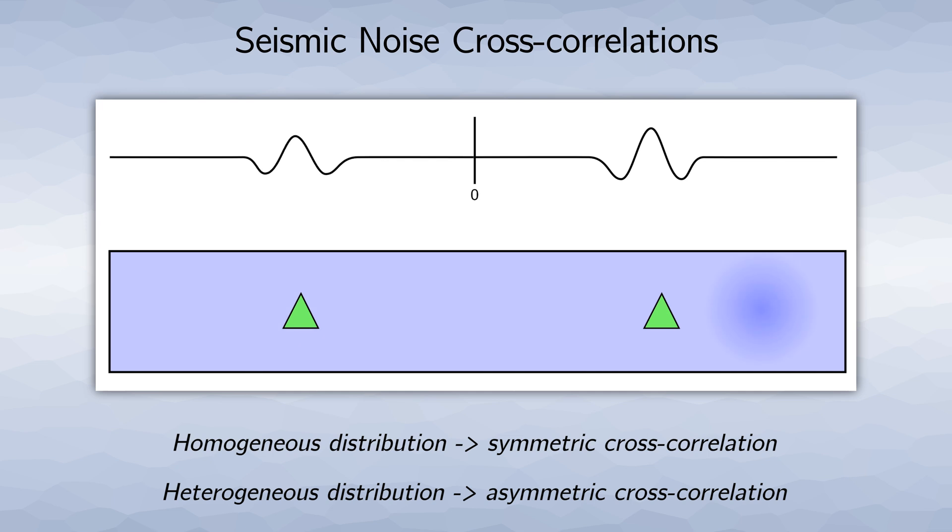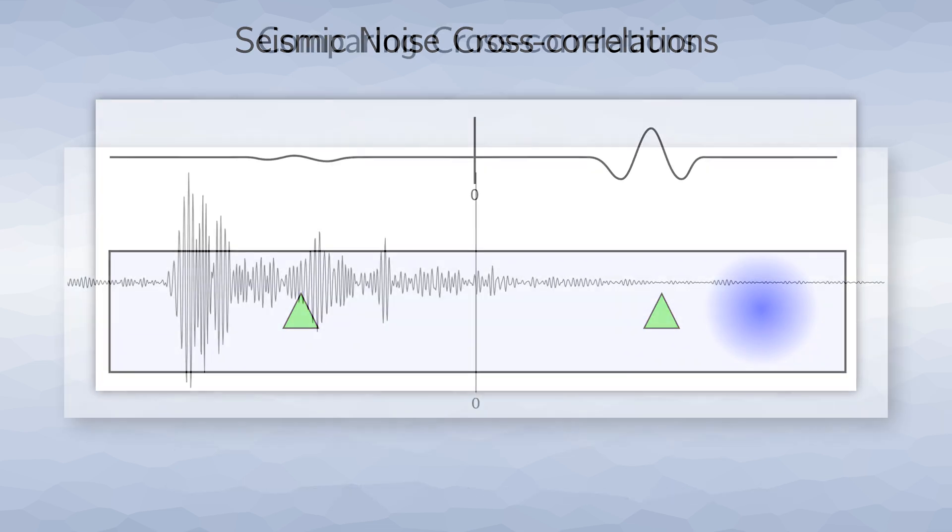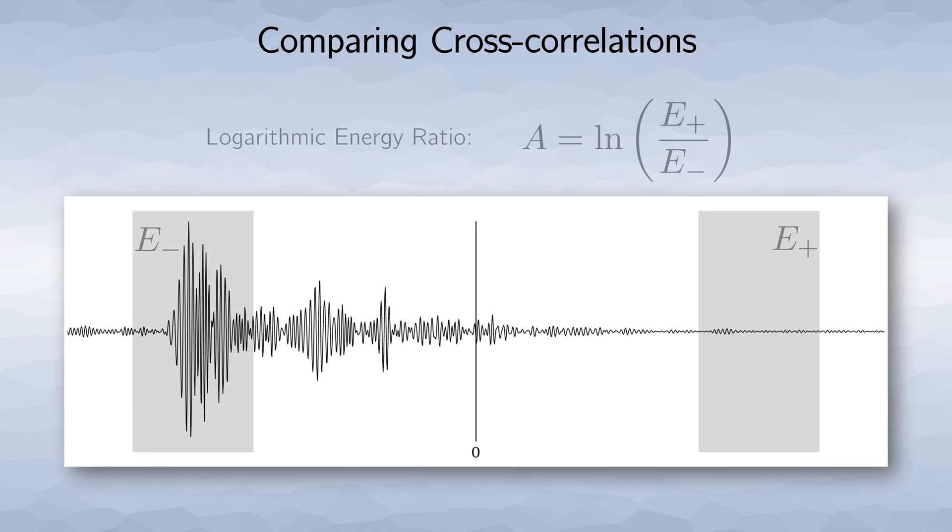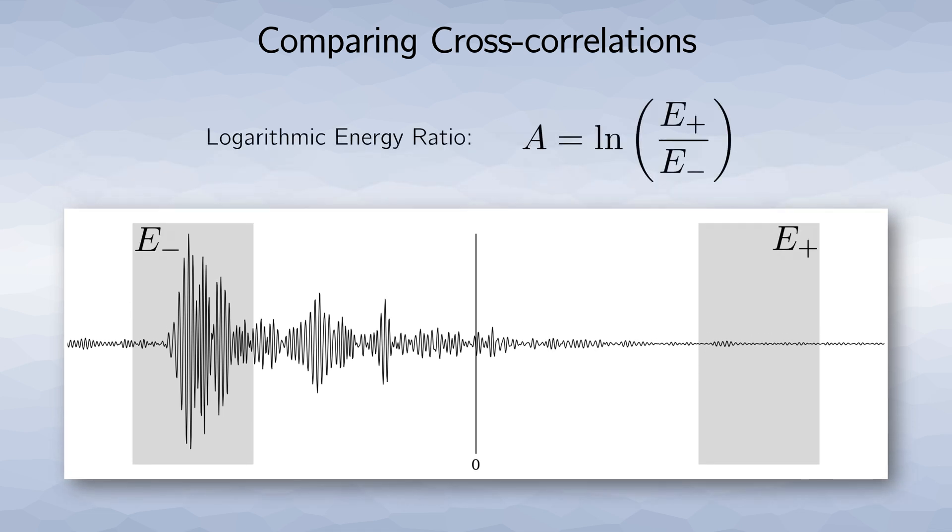But how can we use this to create a noise source distribution model? Let's assume we have an observed cross correlation like the synthetically created one here. Since secondary microseisms are dominated by surface waves, we look at the expected surface wave arrival time window in the causal and acausal part of the cross correlation. We then take a measurement, namely the logarithmic energy ratio, that is the natural logarithm of the ratio of the energies in the expected surface wave arrival time windows.